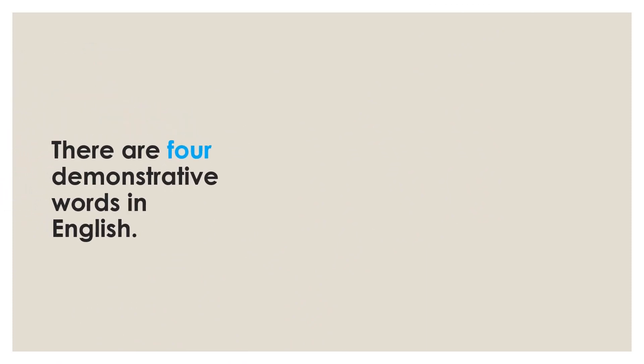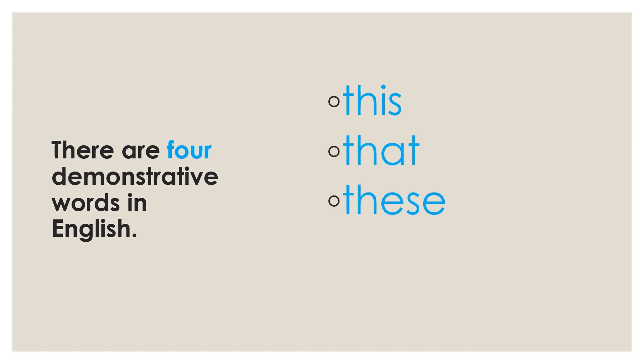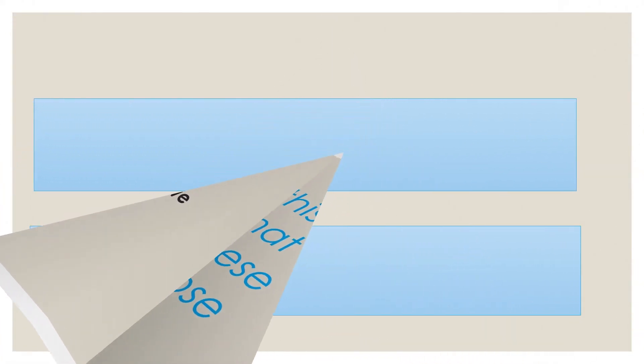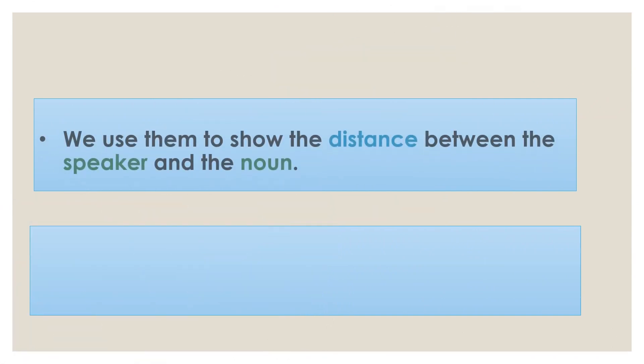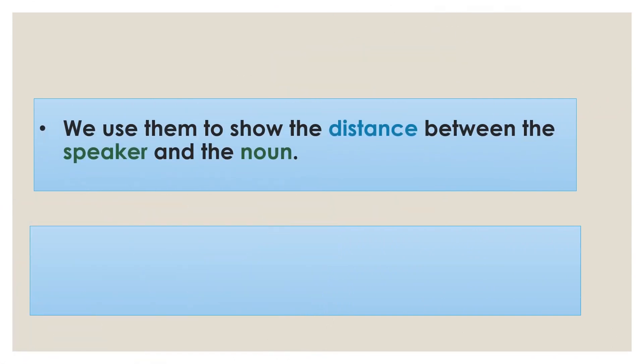There are four demonstrative words in English: this, that, these, and those. We use them to show the distance between the speaker and the noun.